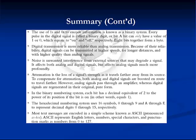Digital transmission is a more reliable method than analog. Digital signals can be transmitted at higher rates, over longer distances, and with higher quality than analog signals. Noise affects both analog and digital signals, but affects analog signals much more profoundly. Attenuation is a loss of signal strength as it travels further from its source. To compensate, both signal types are boosted en route; however, analog signals pass through an amplifier, whereas digital signals are regenerated in their original, pure form.